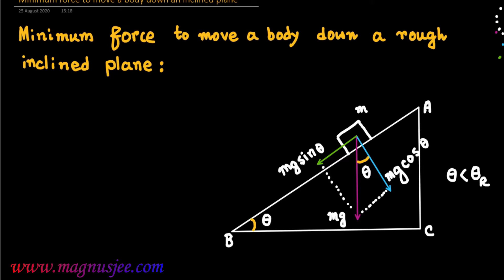We connect these two points to complete a rectangle whose diagonal is the weight Mg. The normal reaction R is applied on the body by the inclined plane, acting perpendicular to the inclined plane AB.